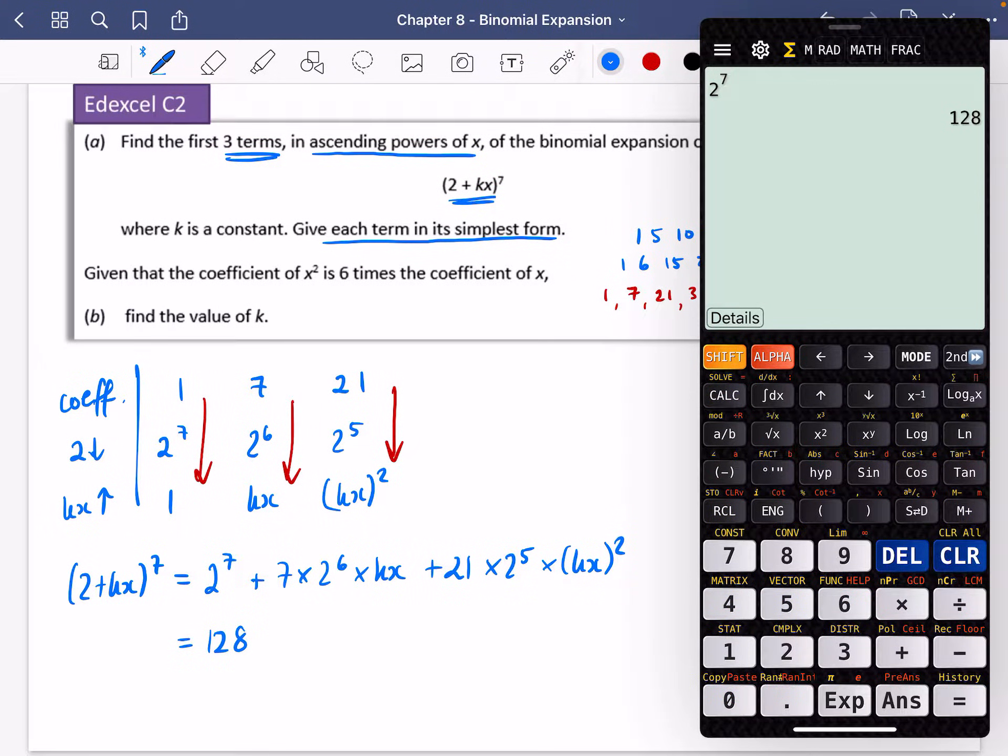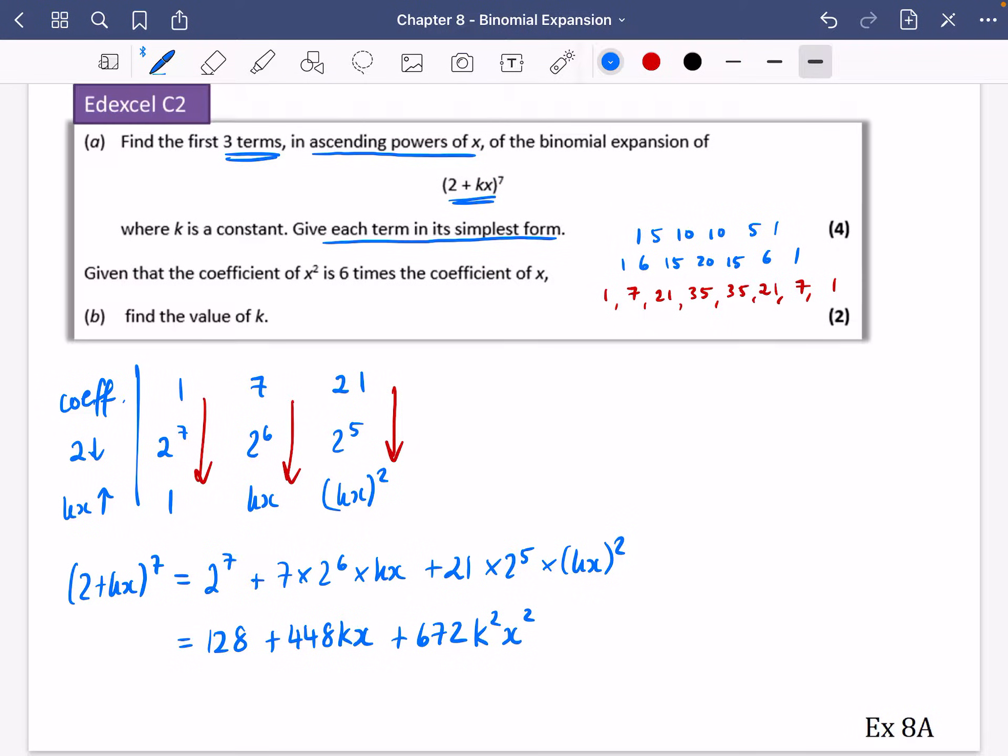I'm then going to do 7 times 2 to the power of 6. That is 448. And there's a k and there's an x. And then I'm going to have 21 times 2 to the power of 5. So that's going to be 672. And then I've got a k squared and I've got an x squared. So I think that's us done for part A of the question.